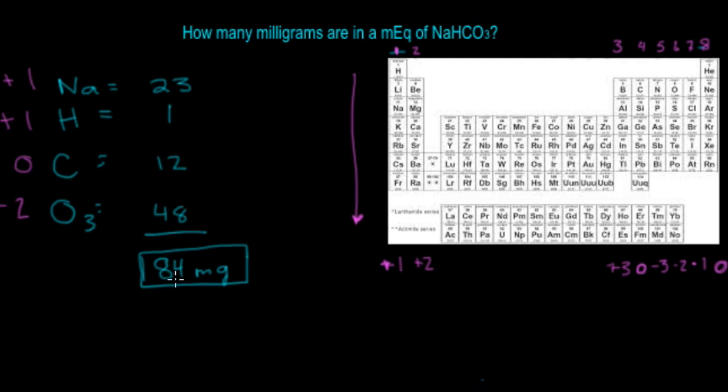To find the milligrams in a milliequivalent, you're going to want to take the greatest charge out of all of these. The greatest charge is plus 1, because plus 1 is greater than minus 2.